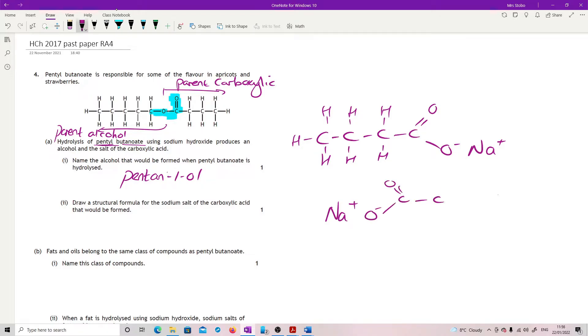It doesn't matter which way around you've got it, but you must have that that's where the association is. And actually, you're getting away with not having to put the charge on, but I think it shows you really understand what you're talking about. Fats and oils belong to the same class of compounds as pentyl butanoate. Name the class of compounds. They are all esters, triesters in the case of fats and oils.